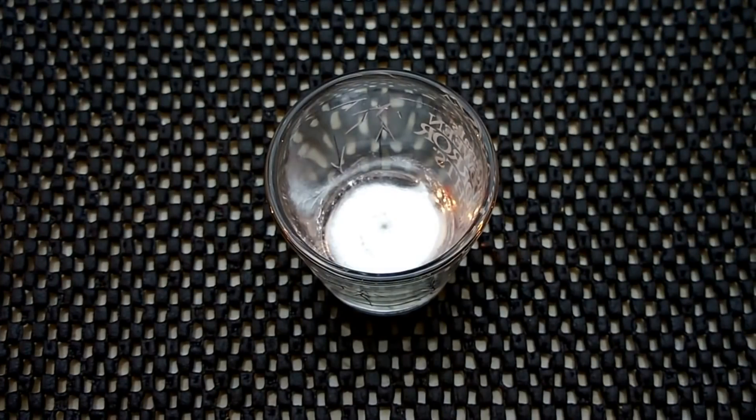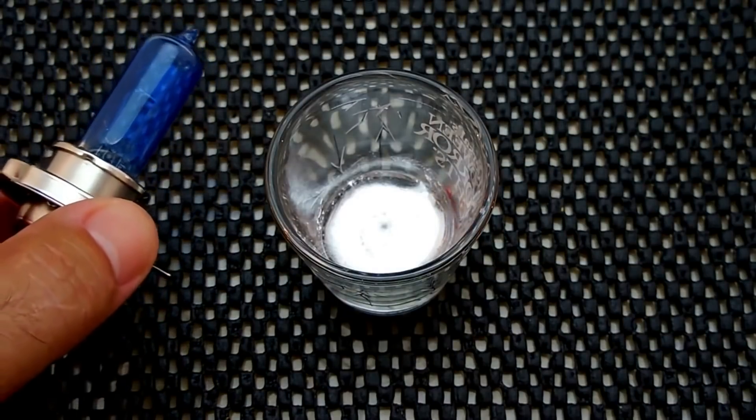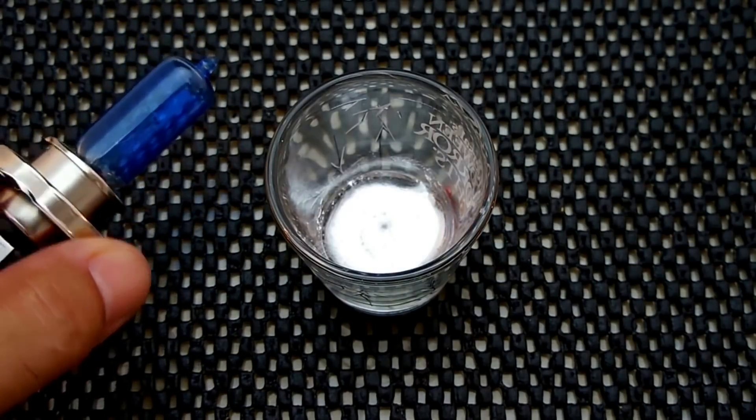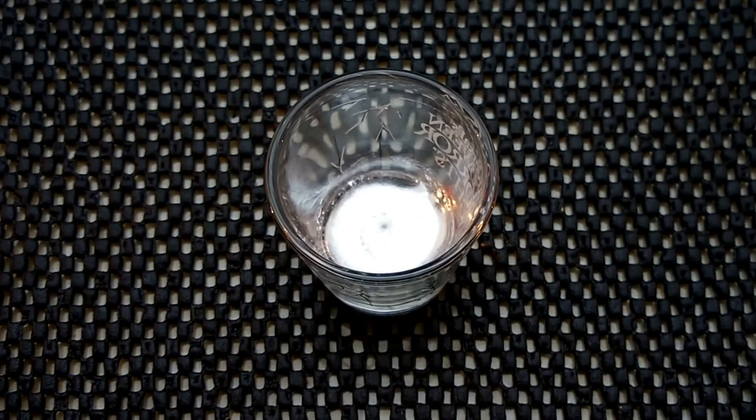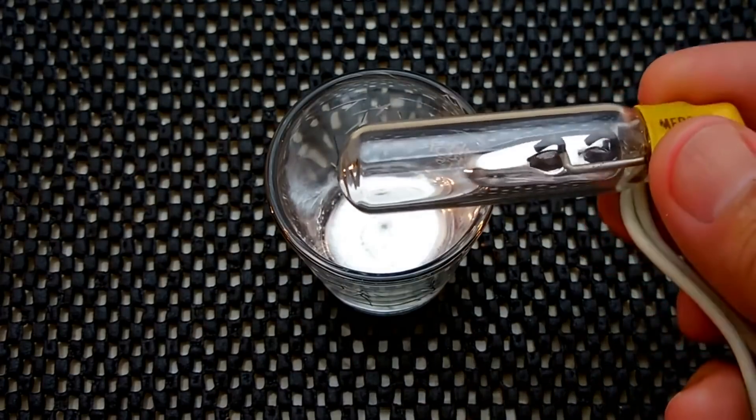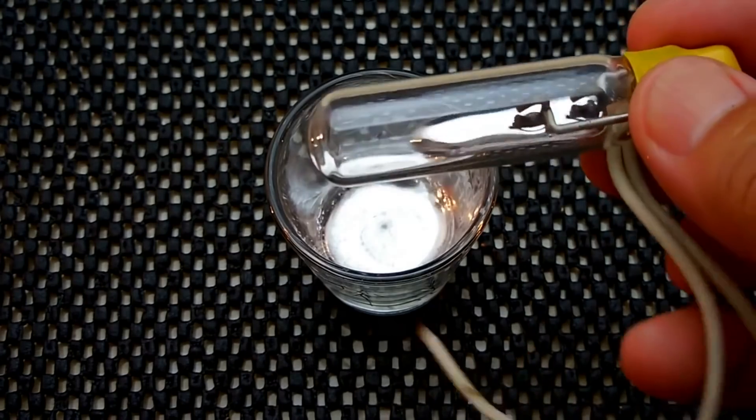Now I want to do an experiment. I'm going to take this H4 quartz halogen lamp. It's a dual filament, 100 watt and 90 watt. I'm going to take a sealed lead-acid battery, 7 amp hour, and I'm going to power that bulb using the mercury switch.